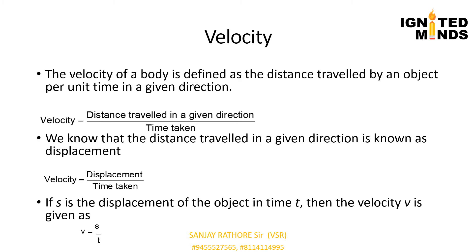Instantaneous speed is the speed of an object at any instant during its motion. When we normally talk about speed, we are referring to instantaneous speed. A speedometer fitted on the dashboard of a vehicle indicates the instantaneous speed of the vehicle.